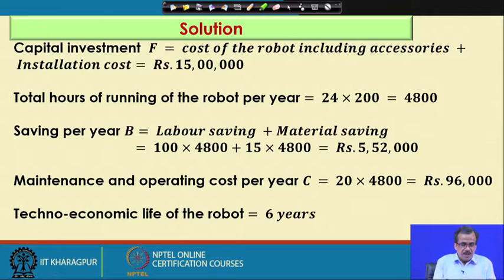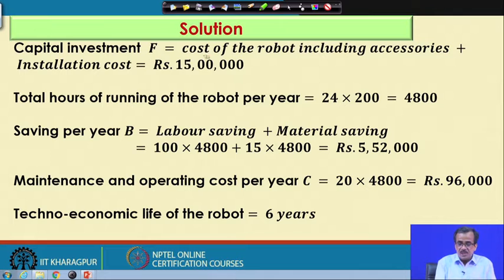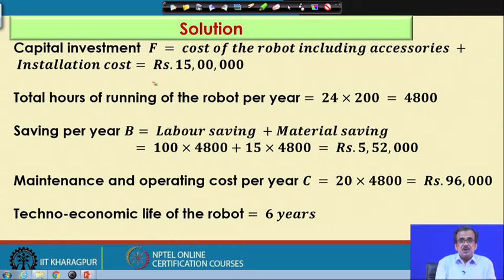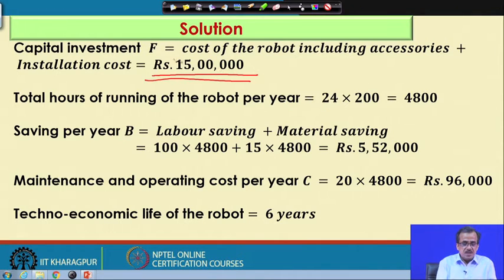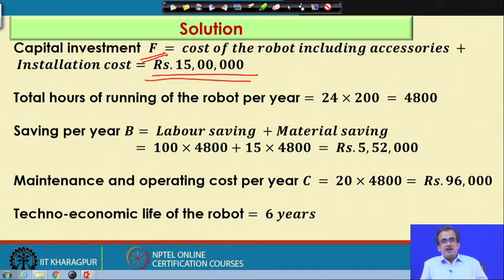Now, the capital investment is denoted by F and this is nothing but the cost of the robot including accessories plus the installation cost. So, rupees 12 lakhs and 3 lakhs — total is rupees 15 lakhs. So, this is nothing but the capital investment denoted by F.